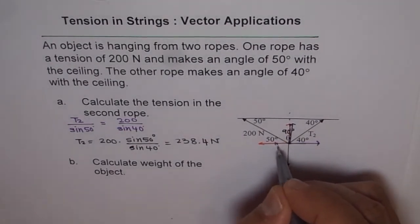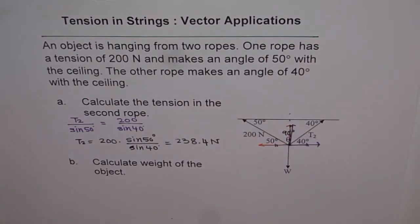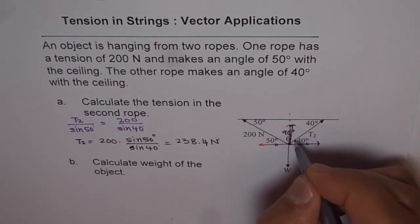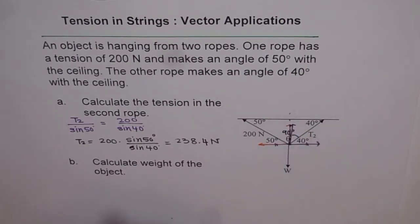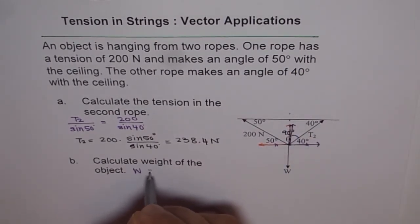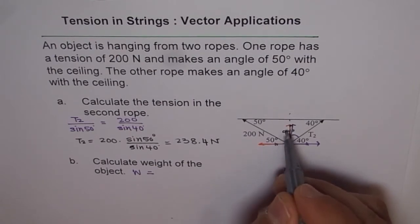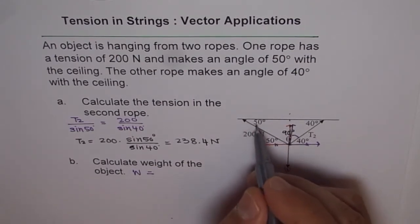The horizontal components will cancel out, but the vertical components will add up. Weight will actually neutralize or the object is in equilibrium. That means weight is a force towards downward, which is equal to sum of the vertical components going up.